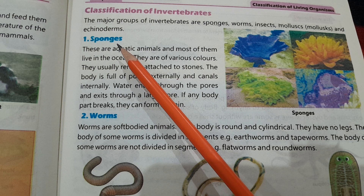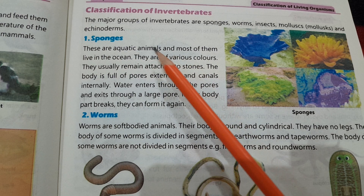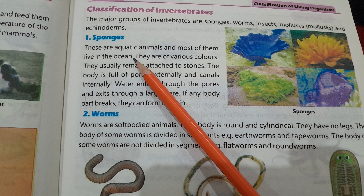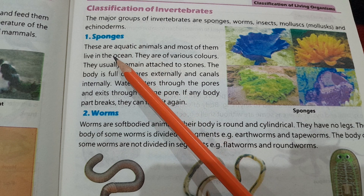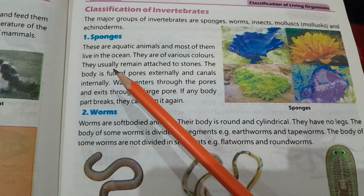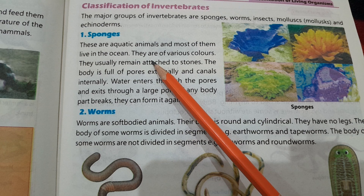First of all we are going to talk about sponges. These are aquatic animals — aquatic animals سے مراد آبی جانور ہیں، وہ جانور جو پانی میں رہتے ہیں — and most of them live in oceans. اور ان میں سے زیادہ تر سمندروں میں رہتے ہیں۔